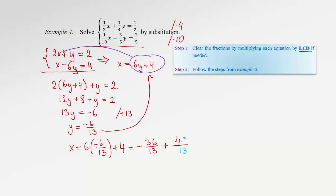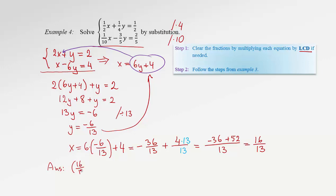If we put 13 in the denominator, we have to do the same to the numerator. So we have how many thirteenths? Negative 36 from this fraction, plus 4 times 13, which is 52. Final step: 52 minus 36 is 16. So x equals 16 thirteenths. We are ready to give the overall answer: x is 16 thirteenths and y is negative 6 thirteenths. Don't be alarmed if you end up with fractional answers — that's okay.